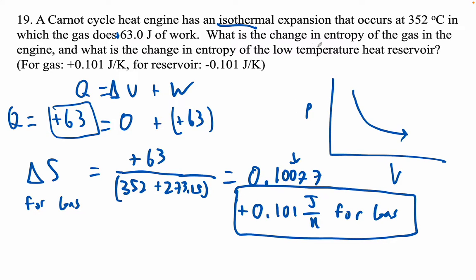And then for the low temperature heat reservoir, which is at the same temperature as the gas for this whole process. Because it happens infinitely slowly, the heat would be flowing out of the reservoir. So it would be negative, it would be just negative 63, and you'd end up with negative 0.101 joules per Kelvin for the reservoir.